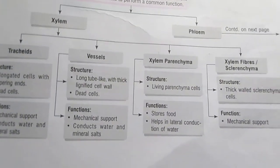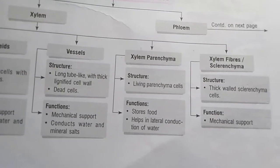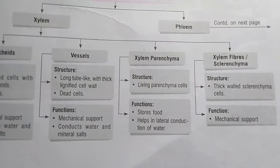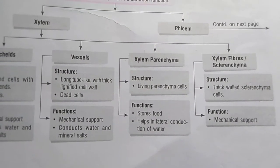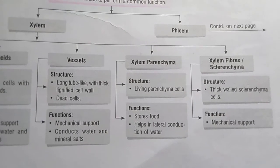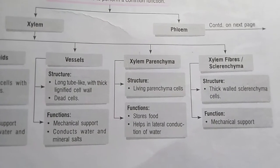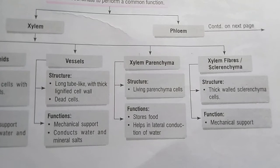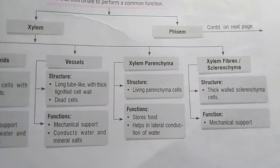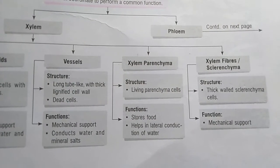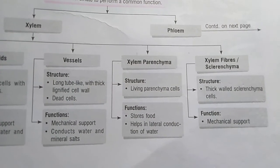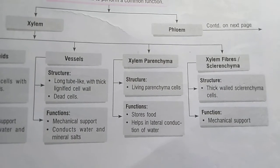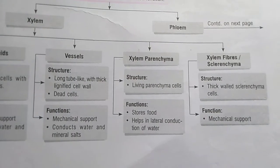Next is xylem parenchyma. Unlike other xylem components, xylem parenchyma consists of living cells. Its function is to store food and to assist in the conduction of water and minerals.